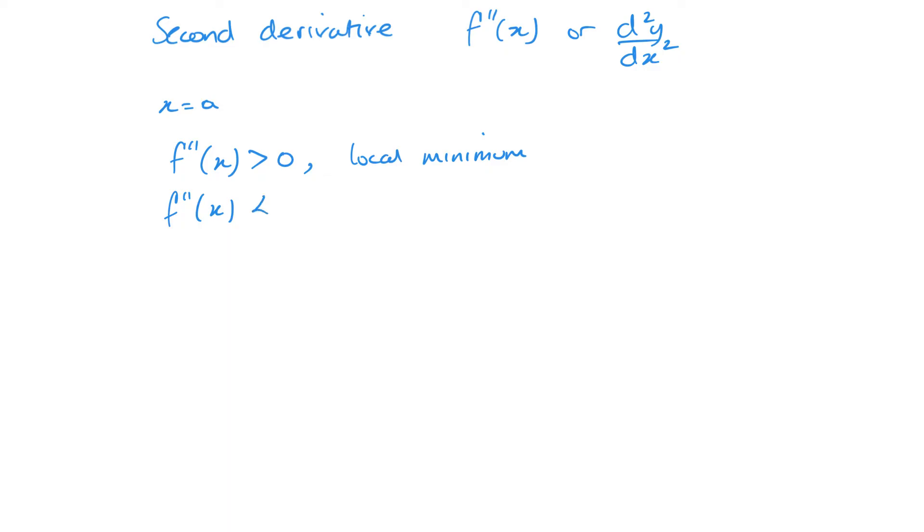And you probably guessed it: if it's less than 0, we have a local maximum. Now when we have it equal to 0, that is when we have a little bit of an issue, because this could be a local minimum, a local maximum, or a point of inflection. So if you do get your second derivative equal to 0, then you have to use the first method the longer way and check what's happening either side of the point. But if we do have it greater than 0 or less than 0, then that saves us a lot of work.